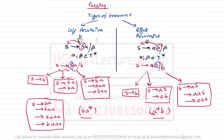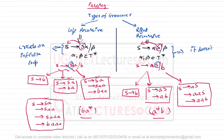A left recursive grammar may not be equivalent to a right recursive grammar. When we discuss compiler design, this left recursive grammar creates an infinite loop in the parsing process, while the right recursive grammar does not create any problem. The reason is: with left recursion, it is like writing a recursive program where we place the recursive call first without any termination condition at the beginning.